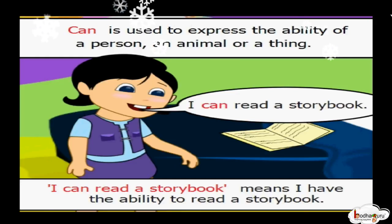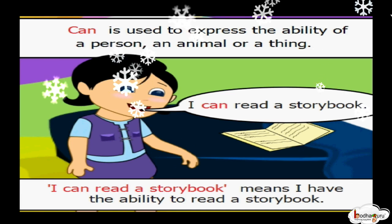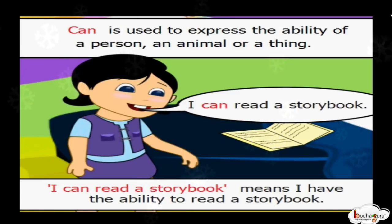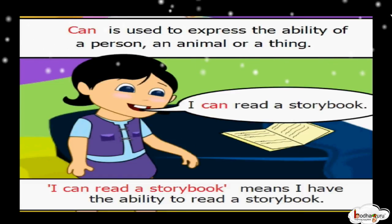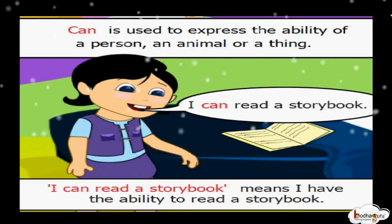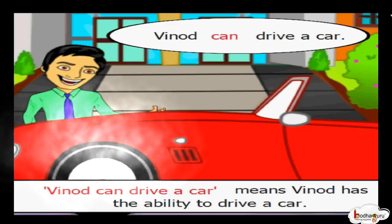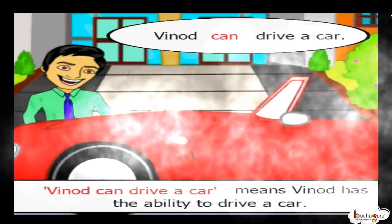I can read a storybook. 'Can' is used to express the ability of a person, an animal, or an object. 'I can read a storybook' means I have the ability to read a storybook. Vinod can drive a car — it means Vinod has the ability to drive a car, or Vinod is able to drive a car.